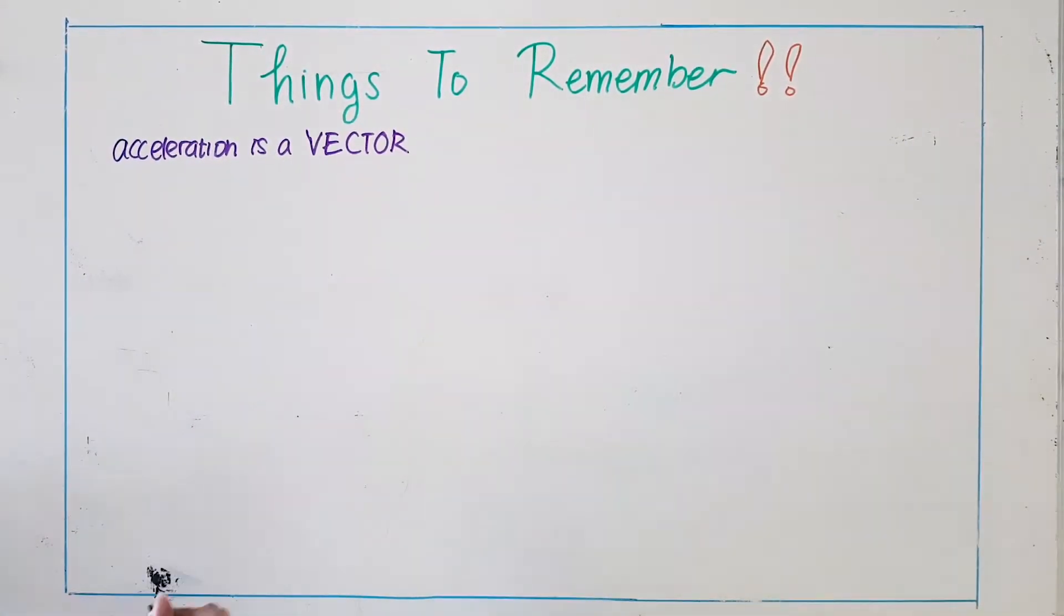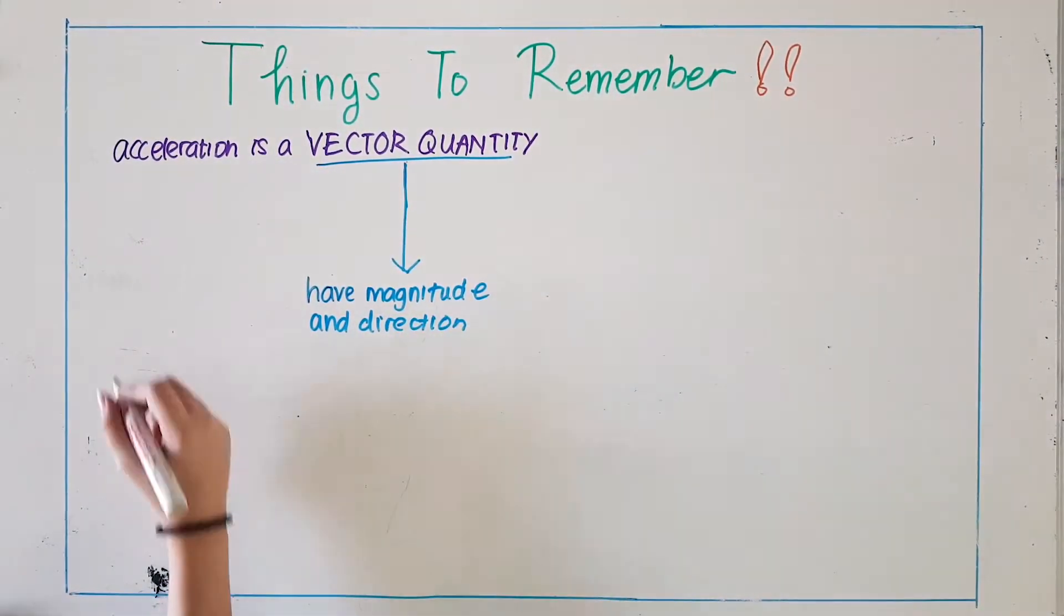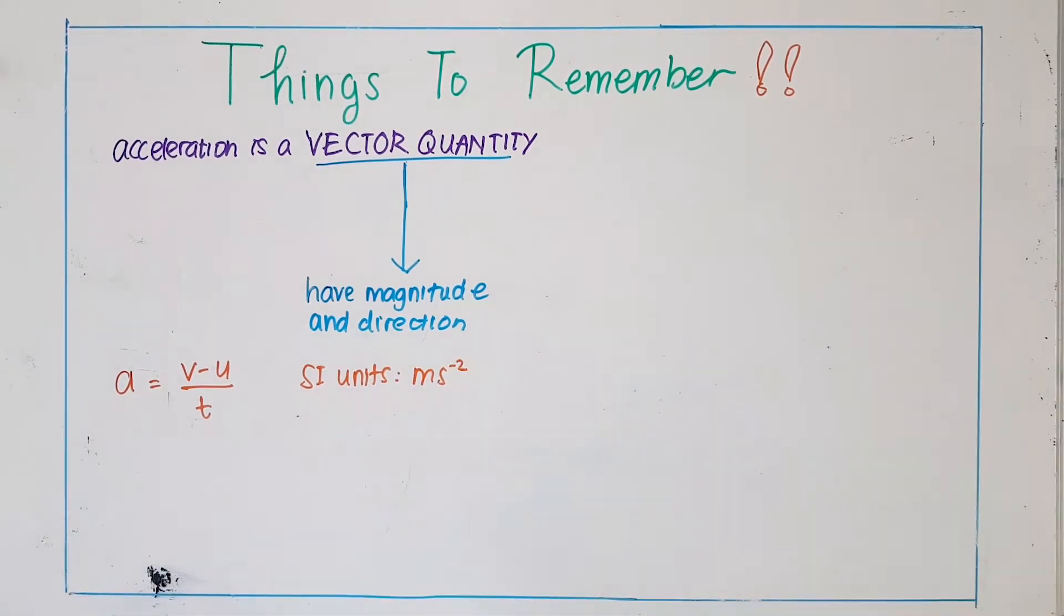Acceleration is a vector quantity. This means that it has magnitude and direction. The equation of acceleration is final velocity minus initial velocity per time. It is measured in SI unit, which is meter per second square.